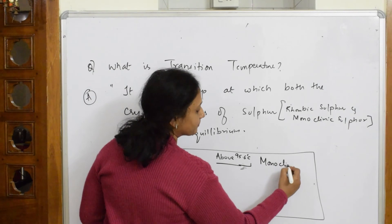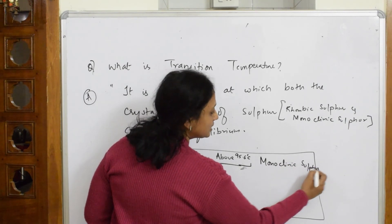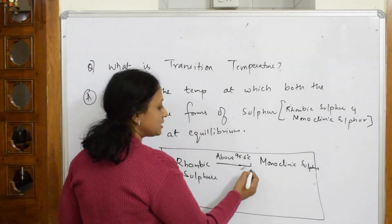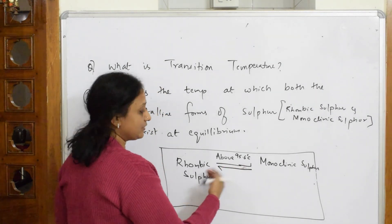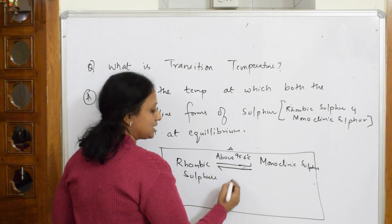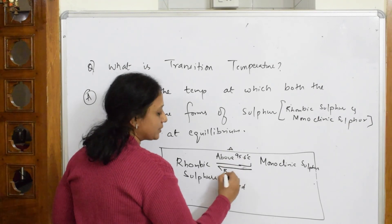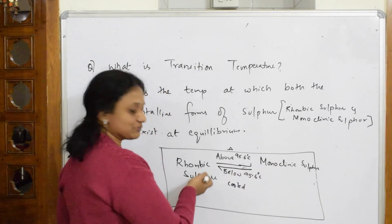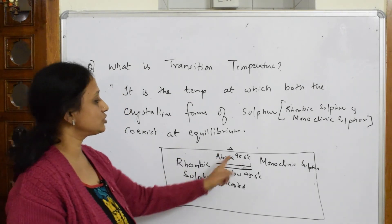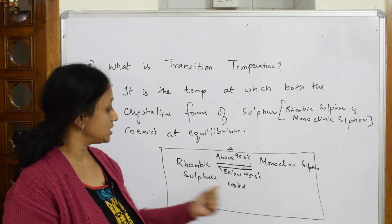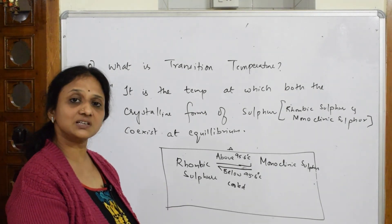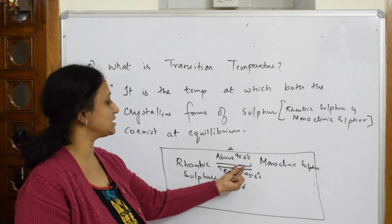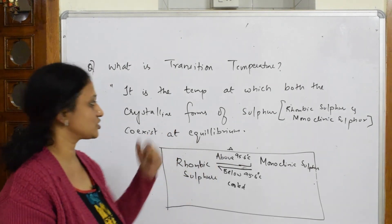If you're decreasing the temperature from 95.6, when the temperature comes down below 95.6 degrees centigrade, immediately monoclinic sulfur comes back to rhombic sulfur. This transition of temperature - the transition, the conversion - between rhombic sulfur to monoclinic, monoclinic to rhombic sulfur is called transition temperature. Both existed at equilibrium. This is transition temperature.